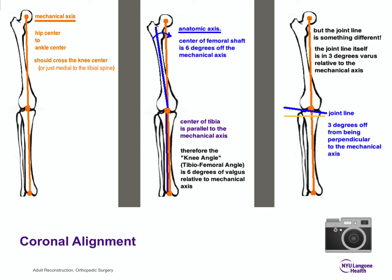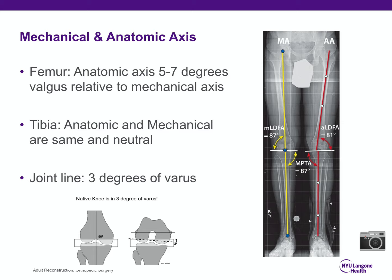Commit this coronal alignment to memory. The mechanical axis runs from the center of the hip to the center of the ankle, which has implications for your valgus cut angles. The joint line is three degrees off from perpendicular to the mechanical axis. The femoral anatomic axis is five to seven degrees valgus relative to the femoral mechanical axis. The joint line is naturally in three degrees of varus, reflected in the medial proximal tibial angle of 87 degrees and the lateral distal femoral angle of 87 degrees.